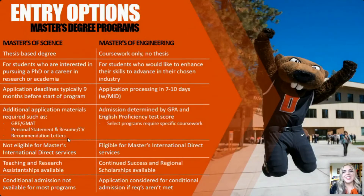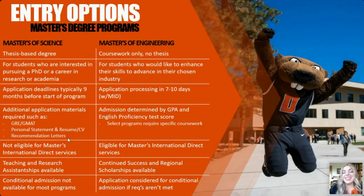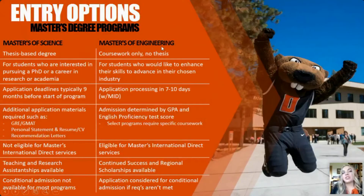For students interested in engineering or computer science programs, there are two different options: a master's of science and a master's of engineering. They can be a little confusing to differentiate, so I wanted to explain them today. The master's of science is a thesis-based degree, while the master's of engineering, or M.Eng, is coursework only — no thesis.